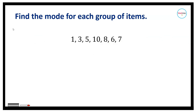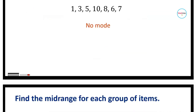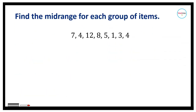Lastly, consider this next set of data: 1, 3, 5, 10, 8, 6, and 7. Notice that all numbers here appear once. Therefore, this is an example of a set that has no mode.